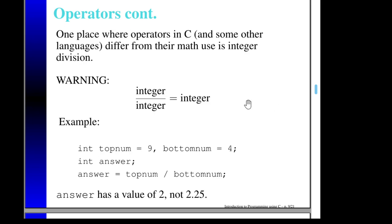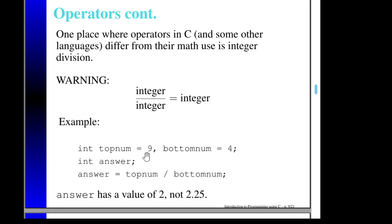Look at this code: I've declared three variables — top_num, bottom_num, and answer — giving top_num the value 9 and bottom_num the value 4. When I say top_num divided by bottom_num and assign that to answer, answer now has the value 2, not 2.25. Because this is integer division: nine divided by four is two in C if these are both ints. If they were doubles, that would be a different story.